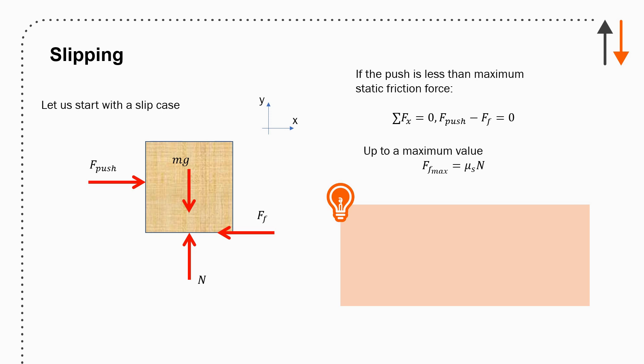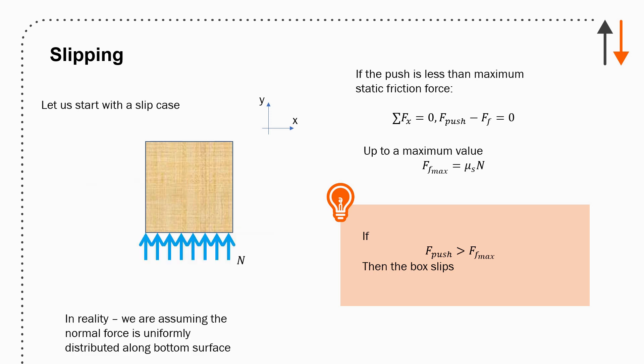It goes up to a maximum value. So force of friction max is equal to mu sub s times N. So I can keep pushing and pushing and I won't move until I reach that value. Once I reach that value, then I will switch to mu sub k times N. So it's a step change. So force of the push is greater than force of friction max, the box slips.